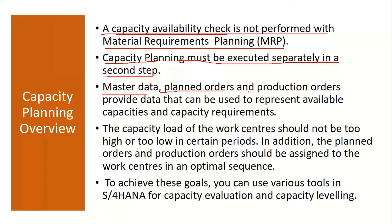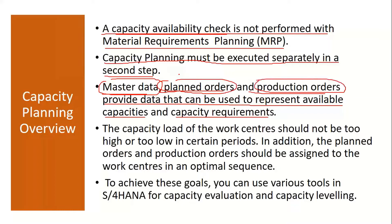Master data, planned orders, and production orders provide data that can be used to represent available capacities and capacity requirements. The main objective of capacity planning is that the capacity load of the work center should not be too high or too low in certain periods — all machines should be occupied with an optimum load, with no overload or underload.